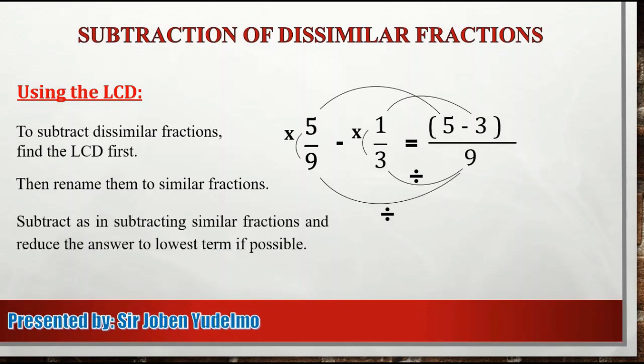Subtract as in subtracting similar fractions. So 5 minus 3, that's equal to 2. Then copy the common denominator, which is 9. And lastly, reduce the answer to the lowest term if possible. So mayroon pa ba common numbers na pwede makapag-divide sa 2 at sa 9? I guess wala na. So that's the final answer. Therefore, 5 ninths minus 1 third is equal to 2 ninths.